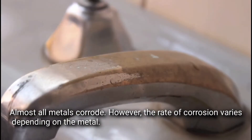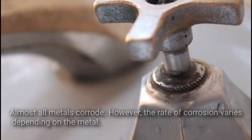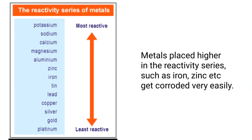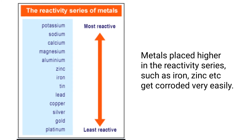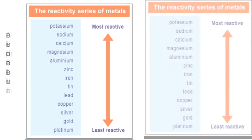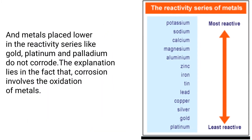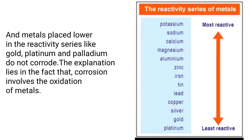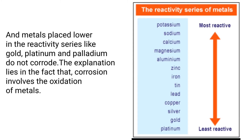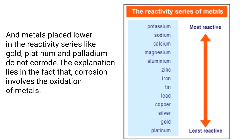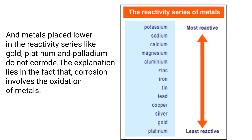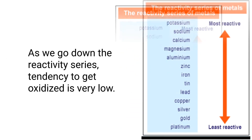Almost all metals corrode; however, the rate of corrosion varies depending on the metal. Metals placed higher in the reactivity series, such as iron and zinc, get corroded very easily. Metals placed lower in the reactivity series, like gold, platinum, and palladium, do not corrode. The explanation lies in the fact that corrosion involves the oxidation of metals.